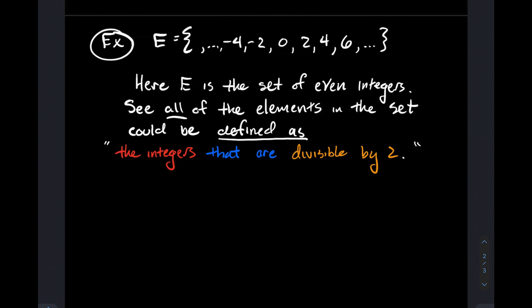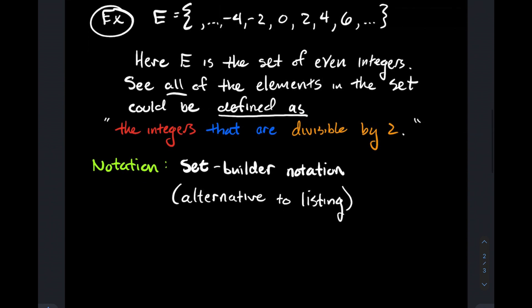I'm underlining the phrase 'defined as' because E consists of all the elements, so there are no other integers that are divisible by 2—they have to be in my list E. Another notation is set-builder notation, and it's an alternative to listing.